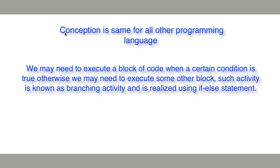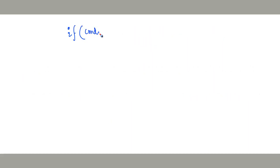In this tutorial, I am going to show you how we can use if-else statements in order to branch in our program. On the basis of some condition, we may need to take some action if the condition is true; otherwise, we may need to take some other action. Such things can be implemented using if-else statements. The concept remains the same in all programming languages, and in most of them, you will find the same keywords if and else for doing branching activities.